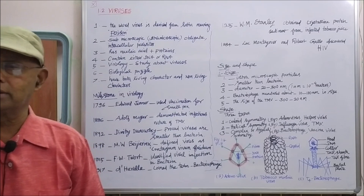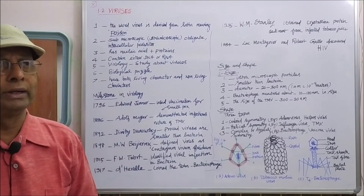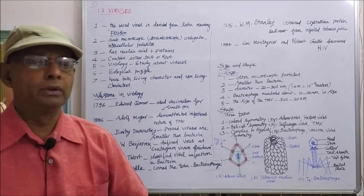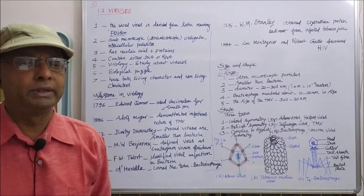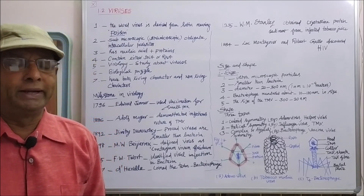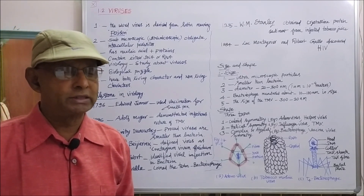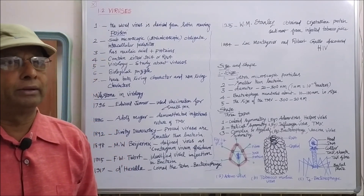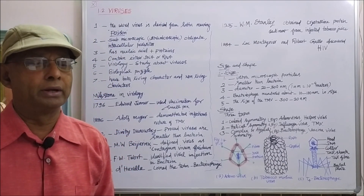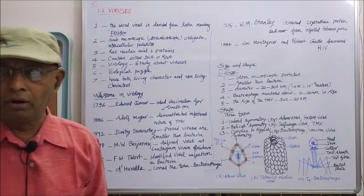Number four: ability to infect and cause disease — viruses cause disease when present in any living cell or living being. Number five: viruses show irritability, which is the response to external stimuli. This is a living characteristic feature of organisms, and viruses also exhibit irritability.